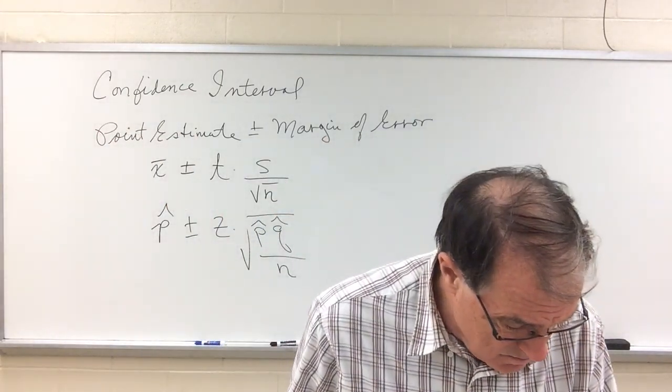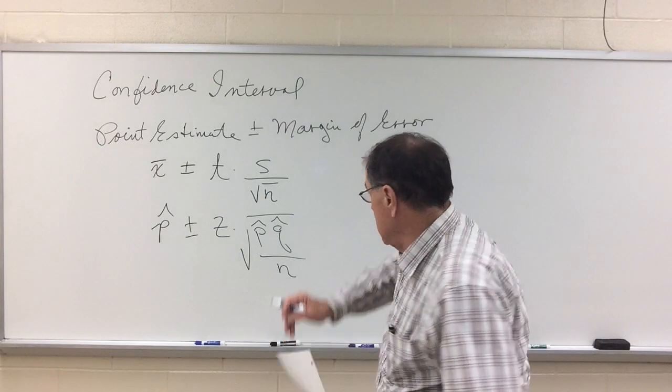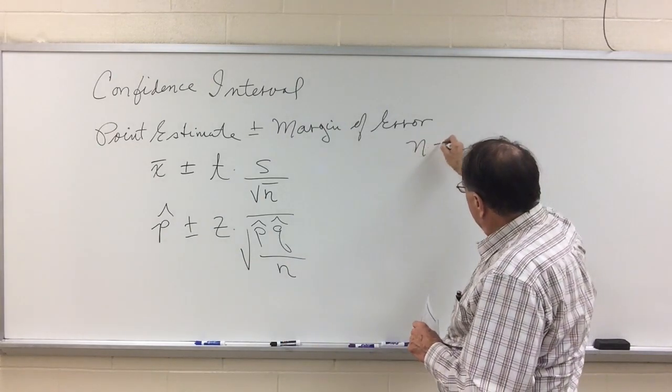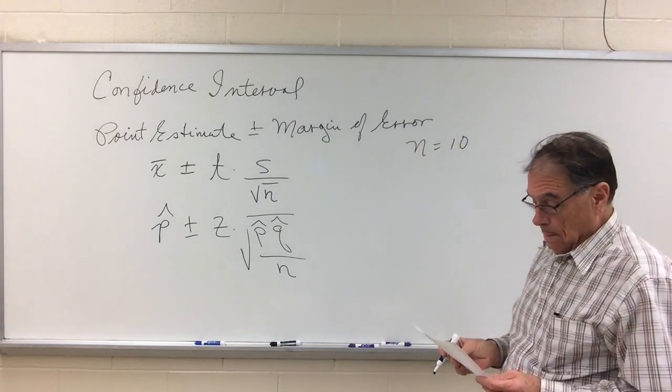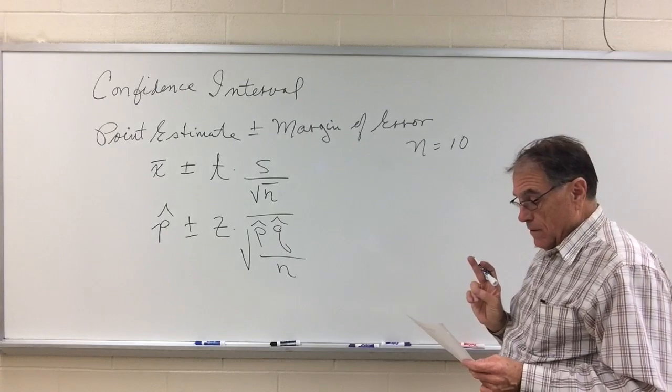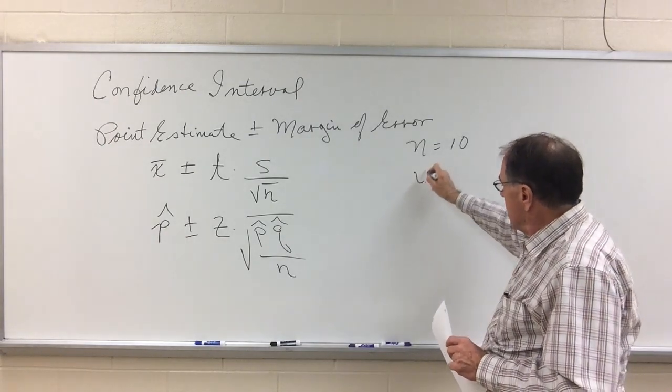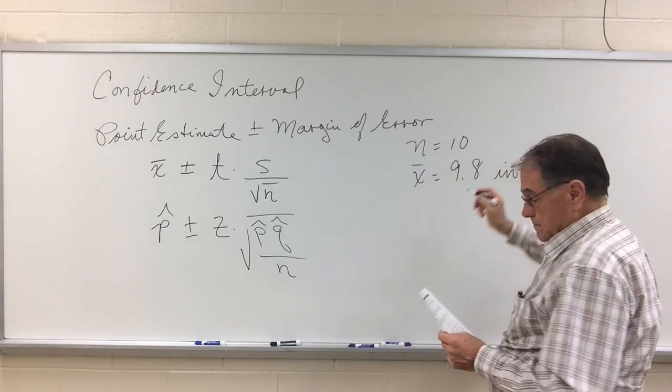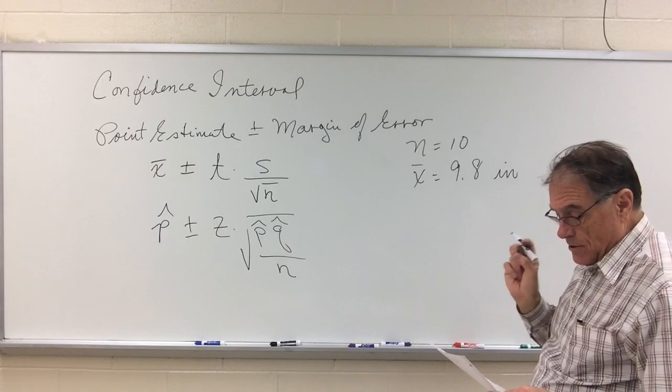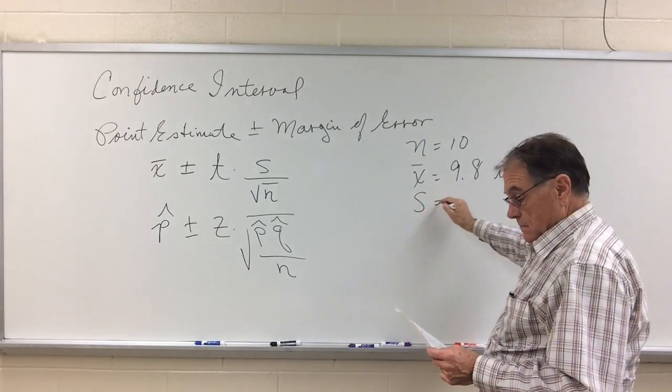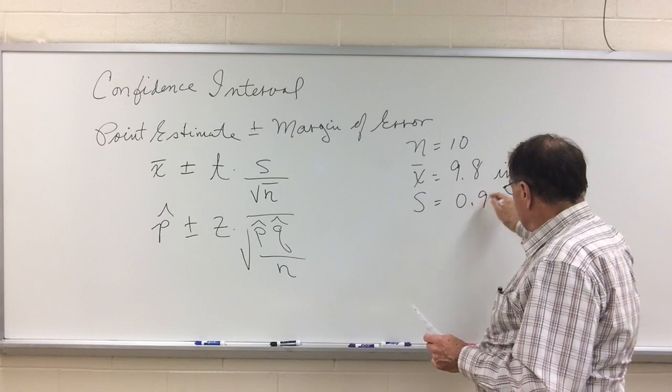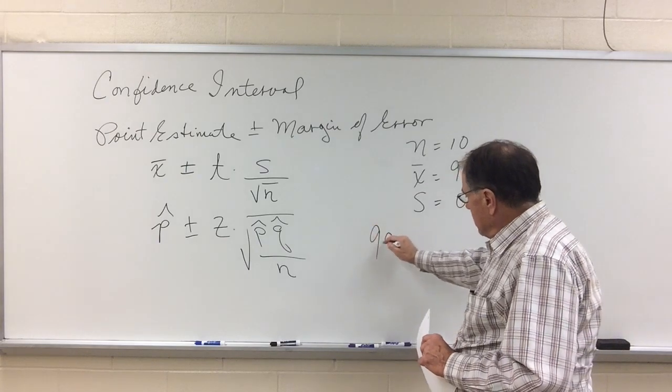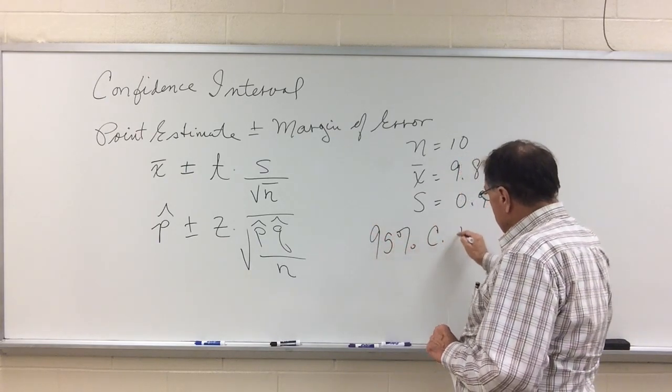So let's take an example. Let's suppose I take a random sample of 10 children. So n equals 10. And their average growth for the first year was 9.8 inches, x-bar equals 9.8 inches. And their standard deviation is 0.96 inches.